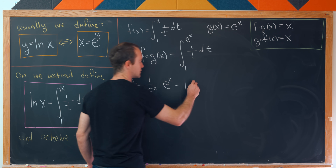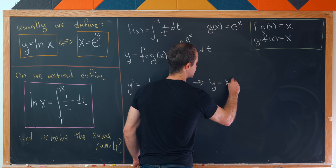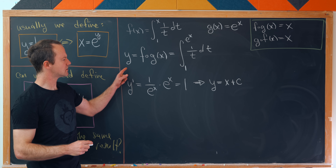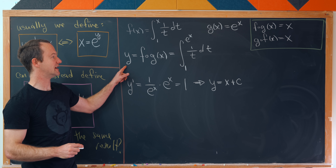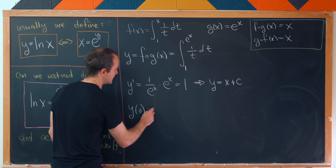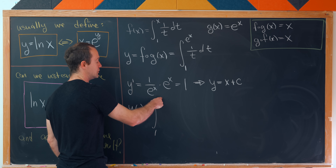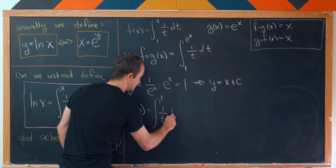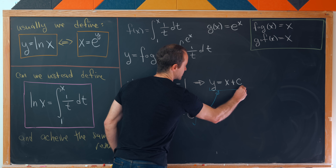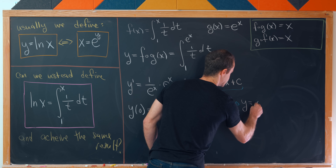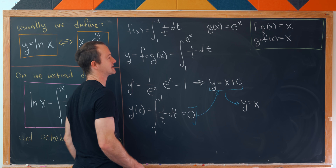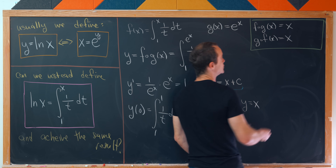Since y' = 1, taking the antiderivative of both sides tells us y = x + C for some constant. Now let's evaluate y at 0: y(0) is the integral from 1 up to e^0 = 1 of 1/t dt, which equals 0. So the constant C = 0, meaning y = x. Cutting out the middle, f∘g(x) = x, confirming the first condition.